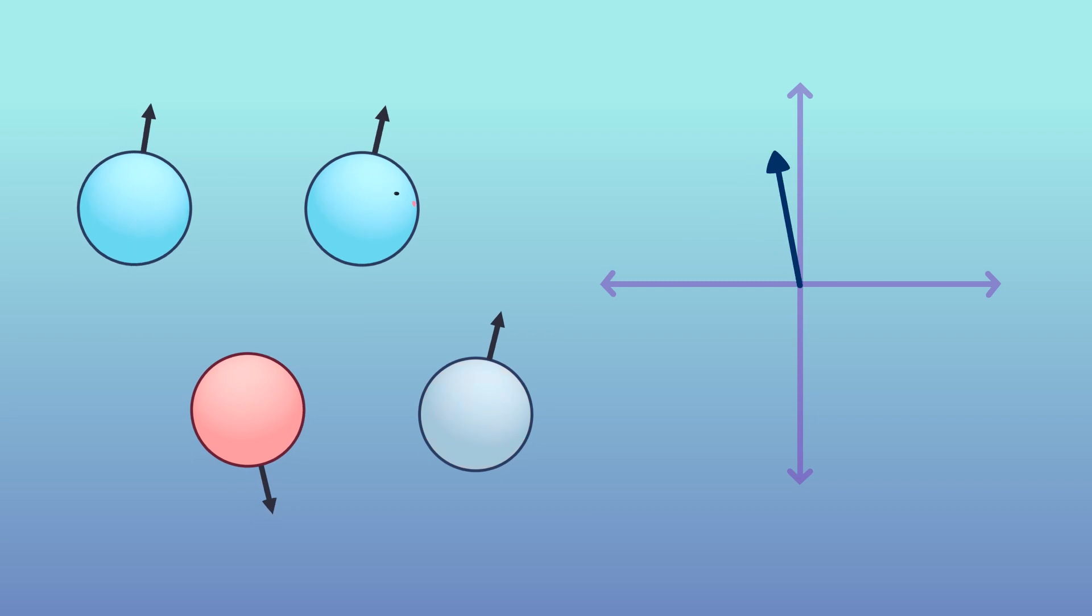During recovery, longitudinal magnetization increases and transverse magnetization decreases, the protons dephase. This looks like a spiraling of the net magnetic vector along the Z axis.